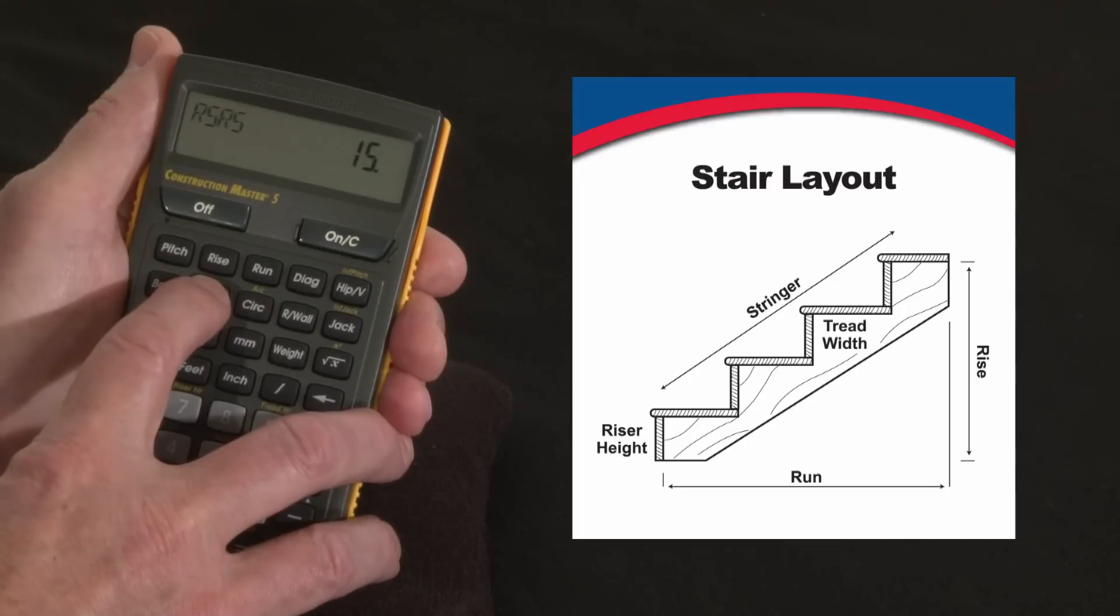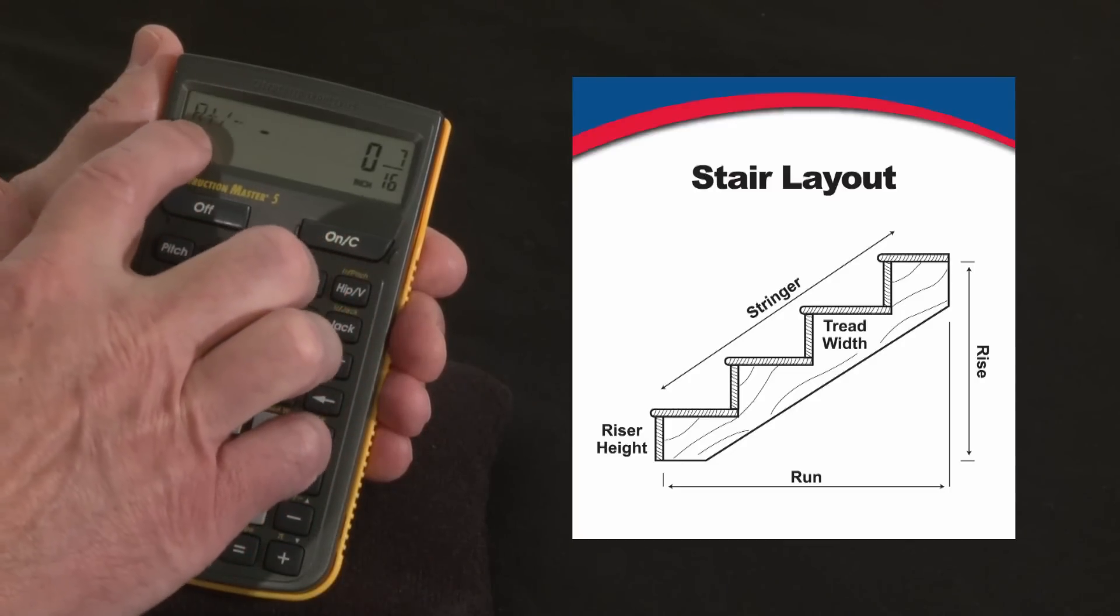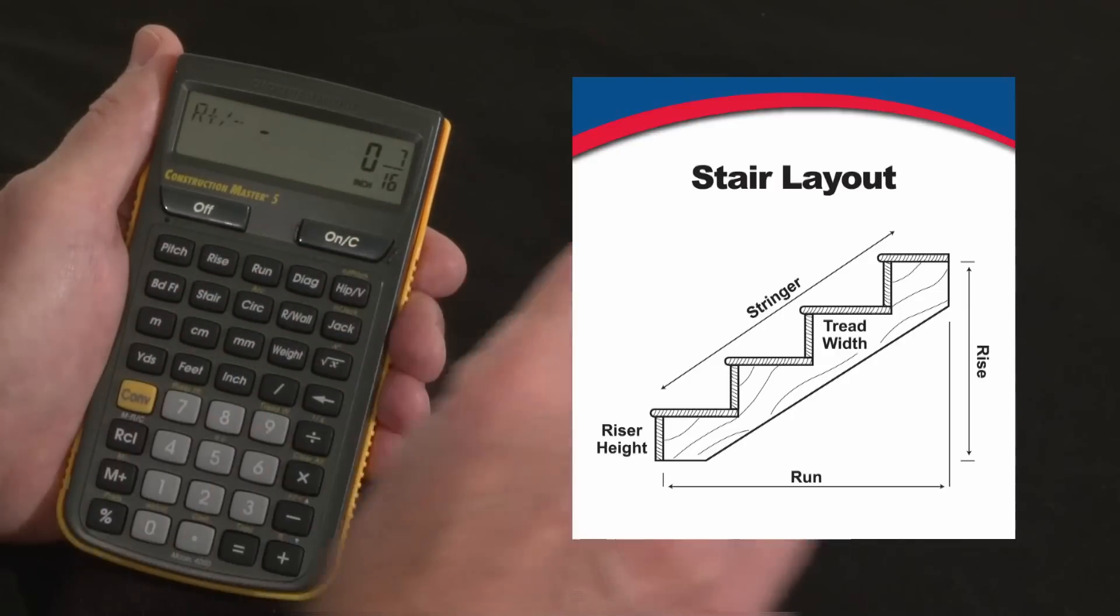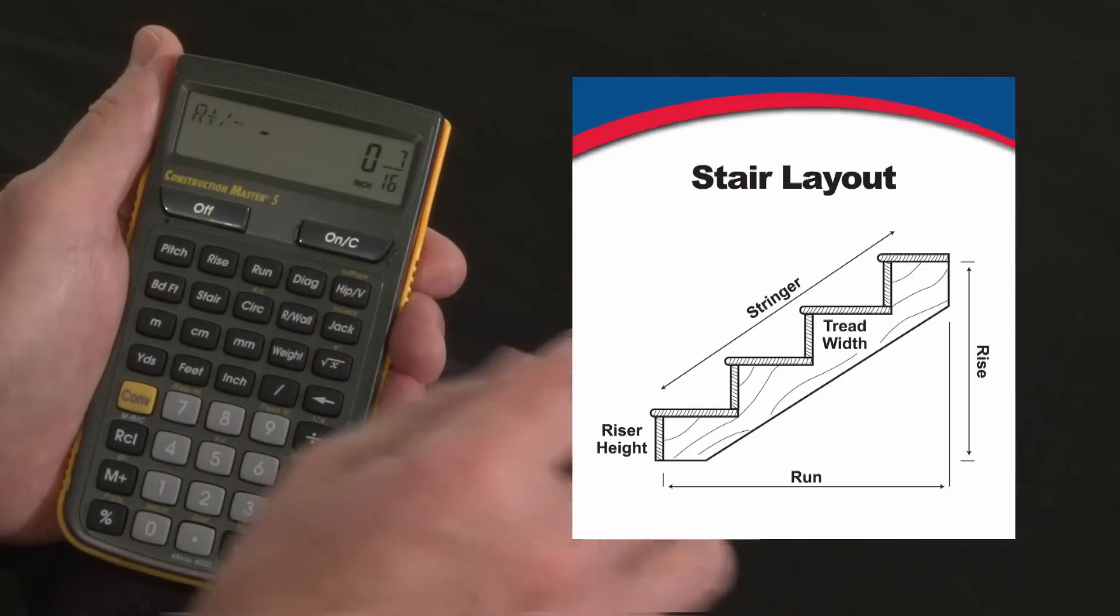Press it again, there's going to be fifteen risers. The R is a remainder, so there's a shortage of seven sixteenths of an inch. So there's seven sixteenths of an inch and you need to blend in either to the first one or the last one or somewhere in between.